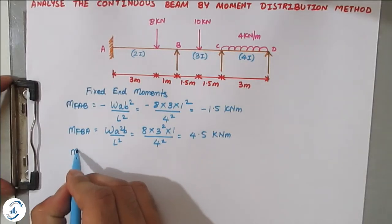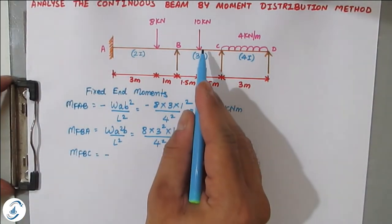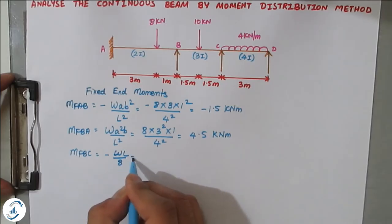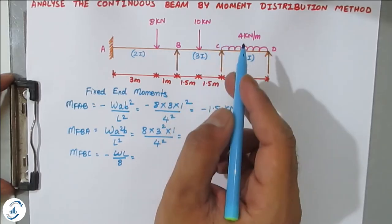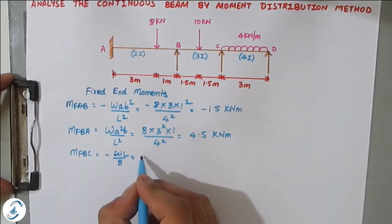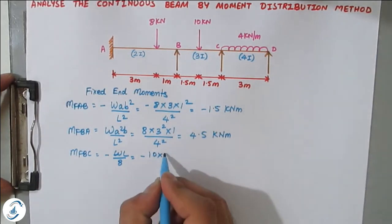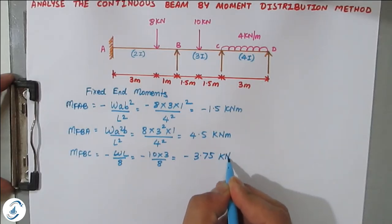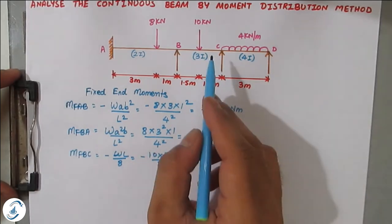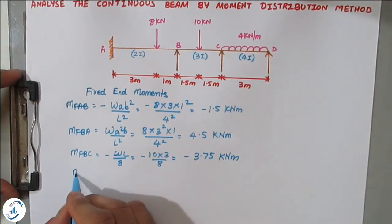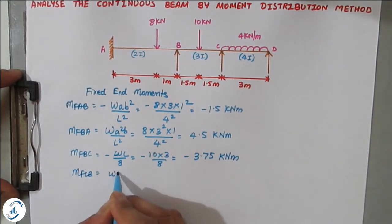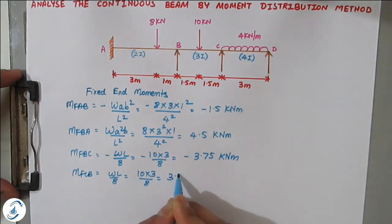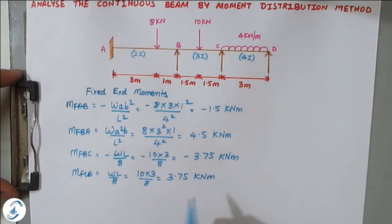For span BC, MF_BC is anti-clockwise: minus W·L / 8, where W = 10 kN and L = 3m, giving minus 10 × 3 / 8 = minus 3.75 kN·m. MF_CB is clockwise: positive W·L / 8 = positive 3.75 kN·m.